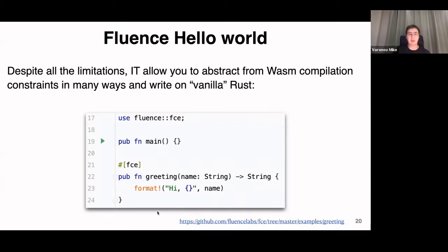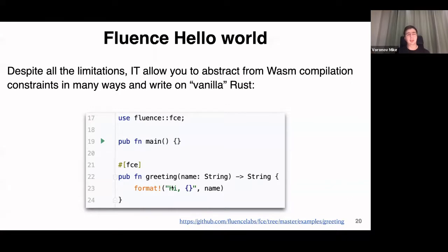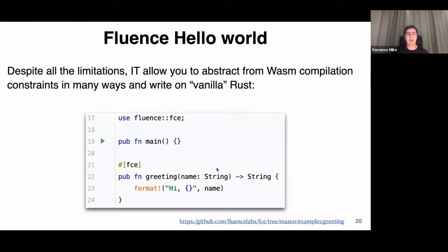With interface types, you can abstract from WebAssembly's four or five primitive types and write normal Rust. Here you can see Hello World for Fluence — we expose the full power of procedural macros. We have one function called greeting; if we apply our FCE macro to it, it will be exported with interface types and have a corresponding greeting adapter. Inside the function we can use types like strings — we don't need to operate with raw wasm types, we can use normal Rust types supported by the SDK.